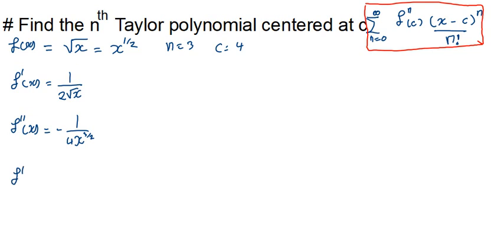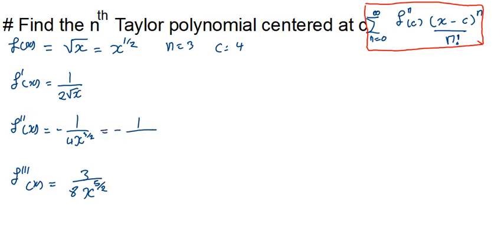The second derivative f double prime of x is negative 1 over (4 times x to the power 3/2). The third derivative f triple prime of x is 3 over 8 times x to the power 5/2. We can write these as: f double prime = −1/(4x^(3/2)) and f triple prime = 3/(8x^(5/2)).